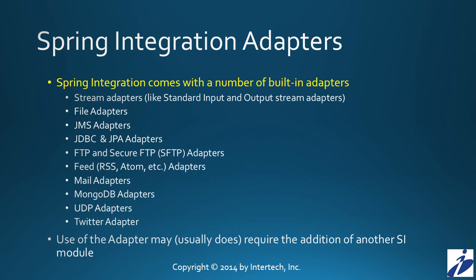In addition, Spring Integration comes with file adapters to get message information in and out of the file system, JMS adapters to get messages in and out of a JMS queue, JDBC and JPA adapters for relational databases, FTP adapters either secured or unsecured, as well as feed adapters, mail adapters, UDP adapters, and Twitter adapters — a whole series of bridges from our Spring Integration channels to external services and applications. Typically, using an adapter will require bringing in an additional Spring Integration module, as many adapters are housed in these additional modules.